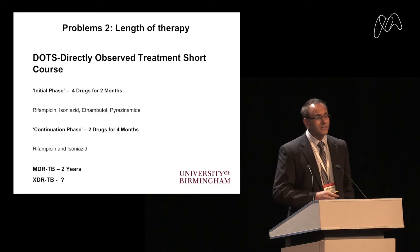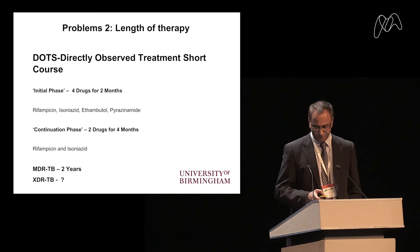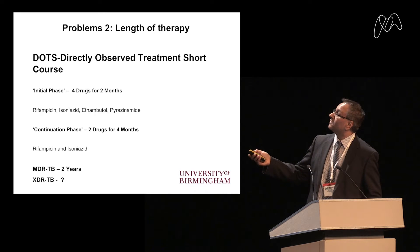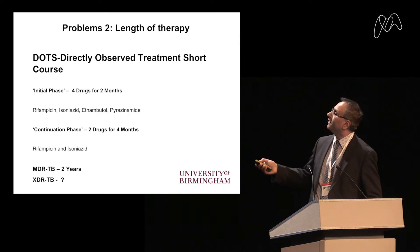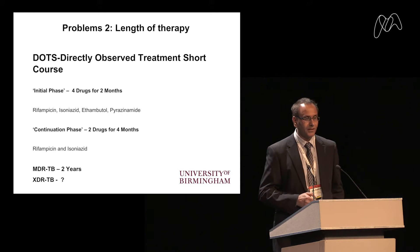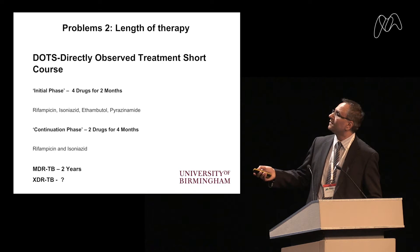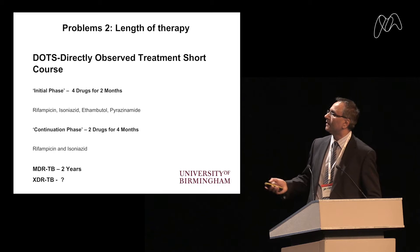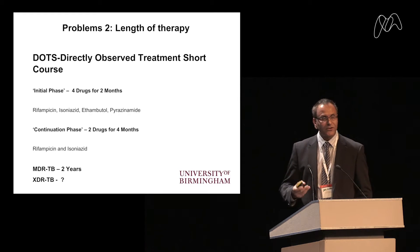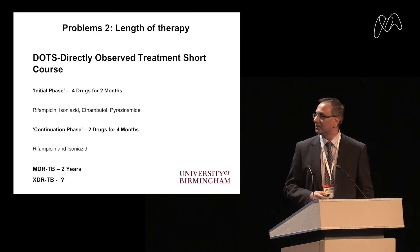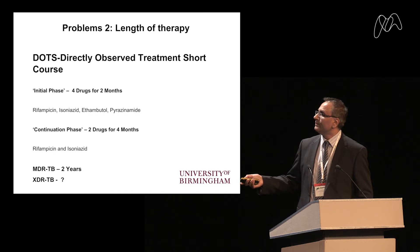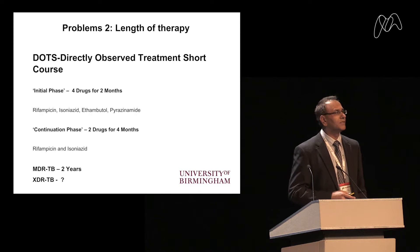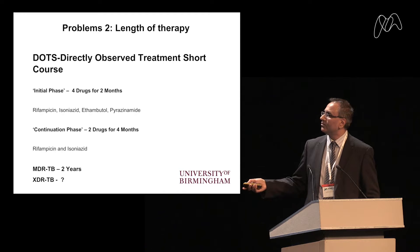The second problem with tuberculosis is the length of therapy. We have DOTS — Directly Observed Treatment Short Course — which is a strange acronym given the combination therapy required. There's an initial phase of four drugs for two months: rifampicin, isoniazid, ethambutol, and pyrazinamide. Then a continuation phase of rifampicin and isoniazid for four months — a very protracted six-month therapy. For MDR-TB this stretches to two years, and we really have no solution for XDR-TB.